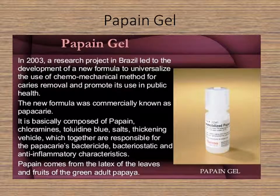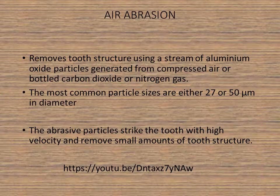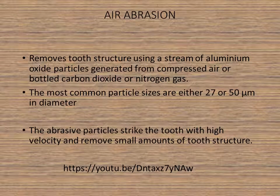Although smart burs are a tad more expensive, they can be considered a wise investment. Also previously mentioned: papain gel — you simply apply a layer of this papain gel onto the affected carious tooth and it will actually disintegrate the caries present, leaving behind only healthy tooth structure.